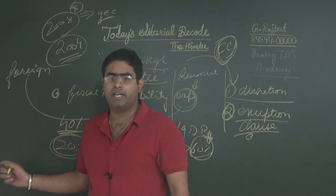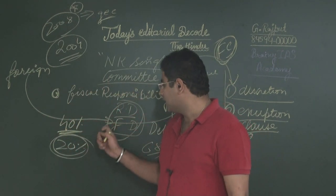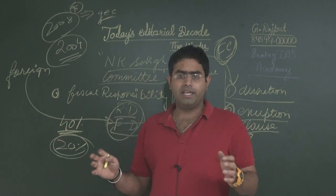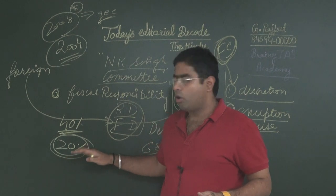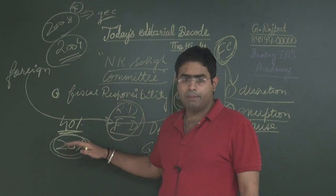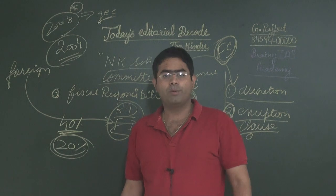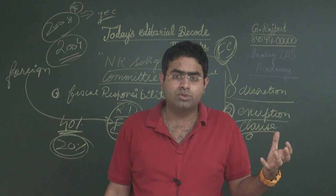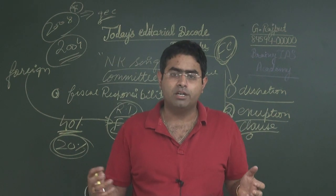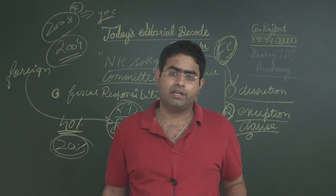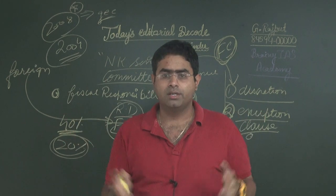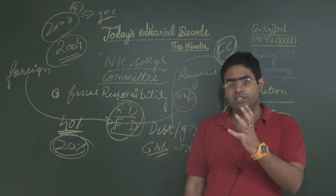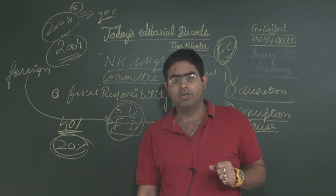However, it is a fallacy of the NK Singh Committee to recommend reducing the debt-to-GDP ratio of the states uniformly to 20%, because all states are not uniform in terms of GDP strength, revenues they are generating, or expenditure they will require to incur.